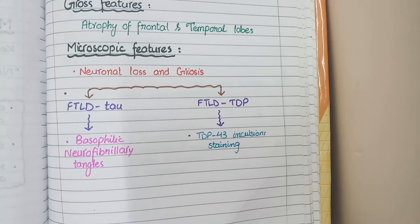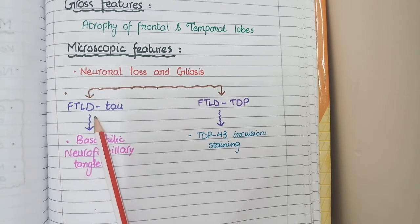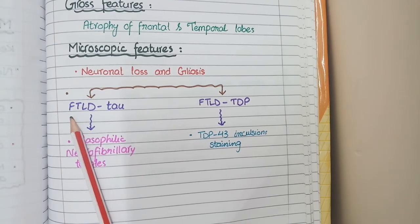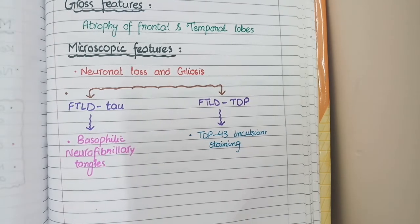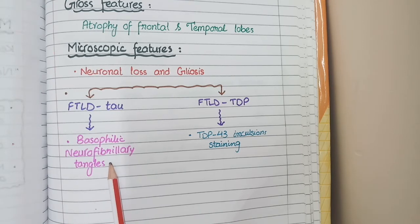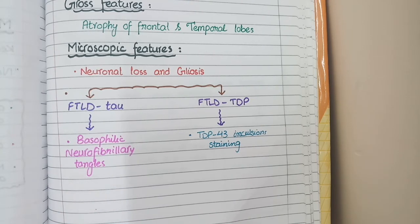Now additionally, as most cases of frontotemporal lobe degeneration are caused by tau protein, so in those cases of frontotemporal lobe degeneration that are dependent on tau protein, you will see deposits of tau protein as basophilic neurofibrillary tangles in the cytoplasm.